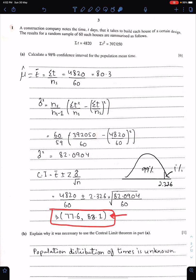Part B: Explain why it was necessary to use the Central Limit Theorem in Part A because population distribution of times is unknown. Or you can say the population distribution is not normal.